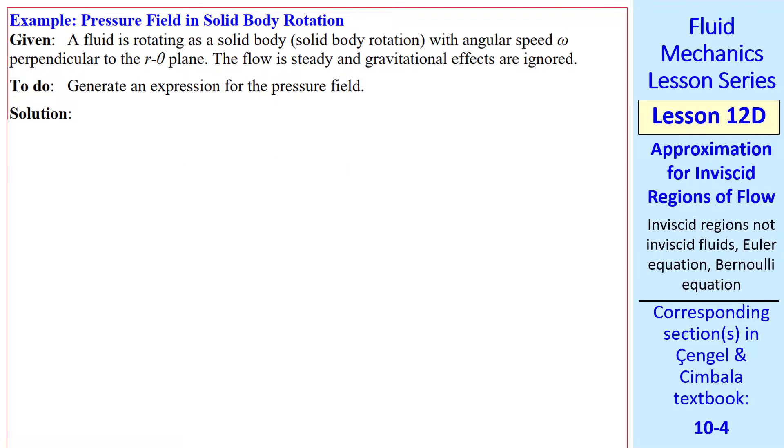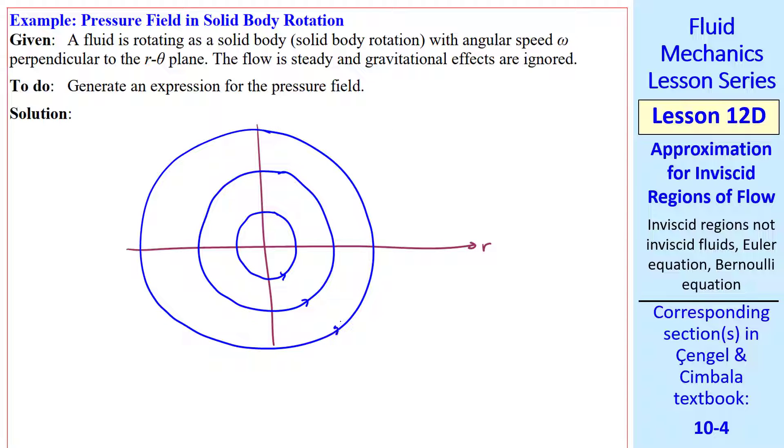Now let's do an example problem. We have a fluid that's rotating as a solid body, or solid body rotation. The angular speed is omega, which is perpendicular to the r theta plane. This flow is steady, and we're going to ignore gravitational effects. We're asked to generate an expression for the pressure field. I'll start by sketching the flow. This flow is solid body rotation, so the streamlines are concentric circles. If r is our horizontal axis and u theta is our vertical axis, u theta starts at zero and grows linearly with radius.